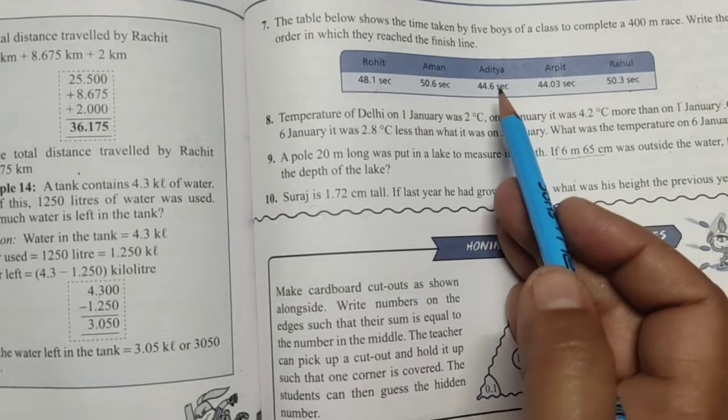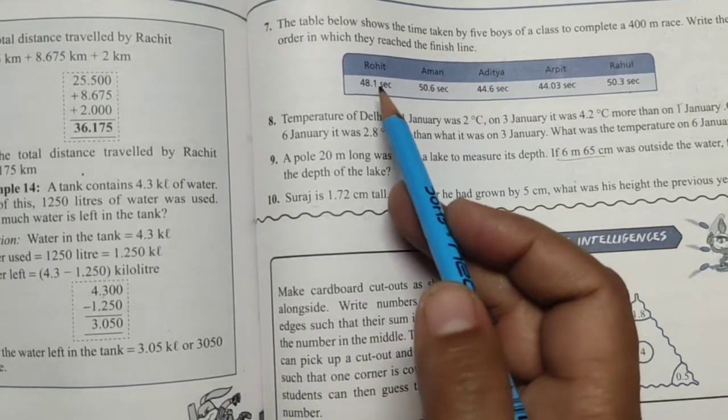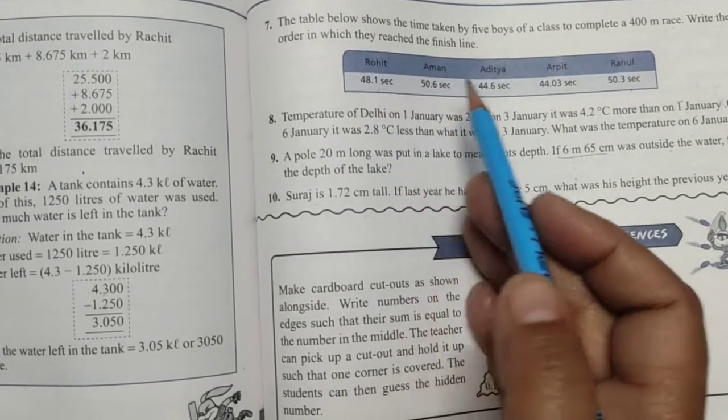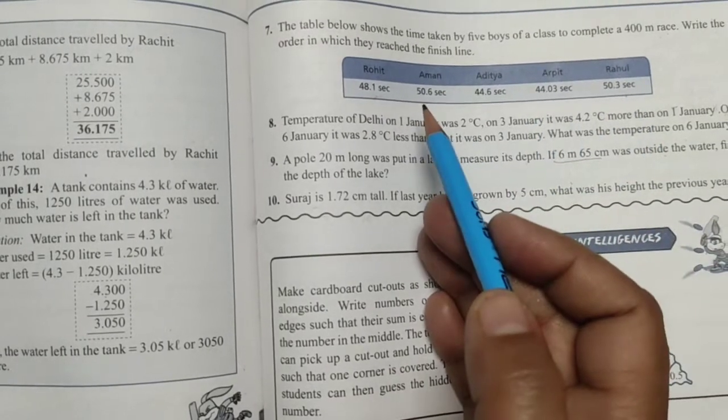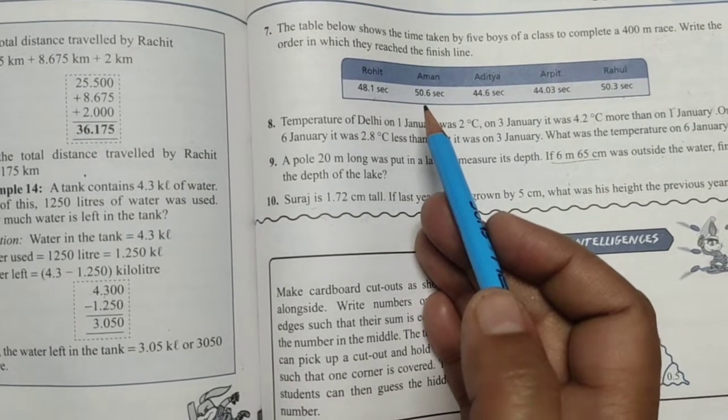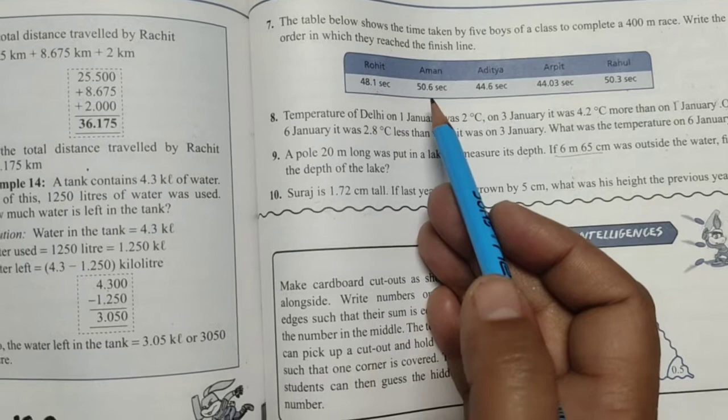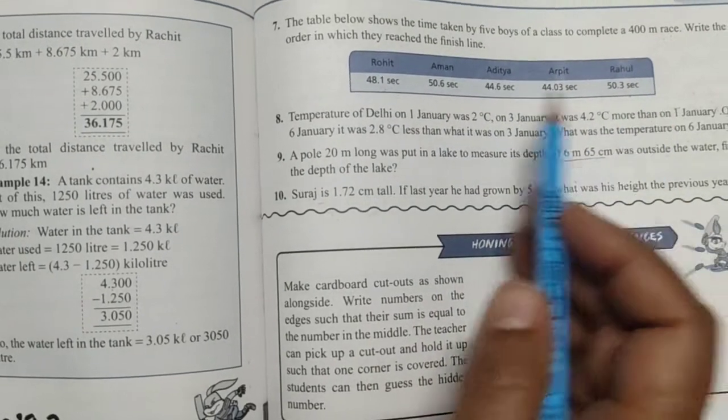Arpit. Then Aditya. First, Arpit's name, then Aditya. Then Rohit. And then Rahul. And who has taken the most time? Aman, 50.6. So you have just written their names. Okay?